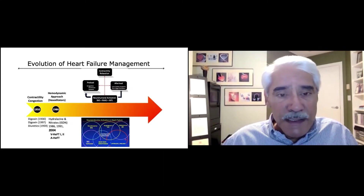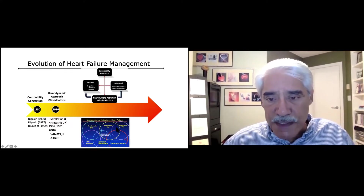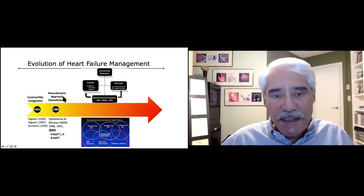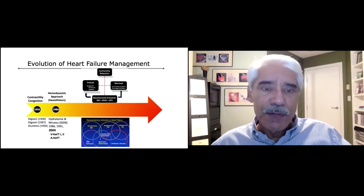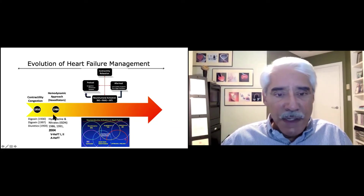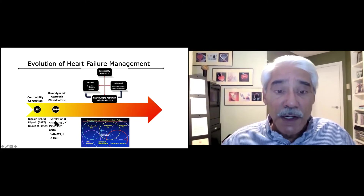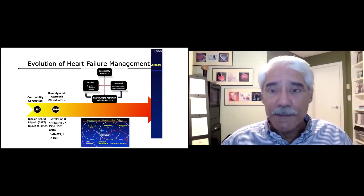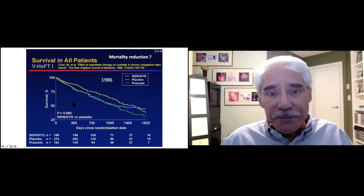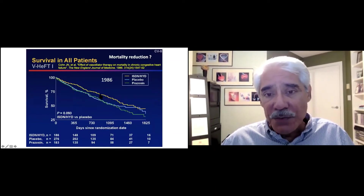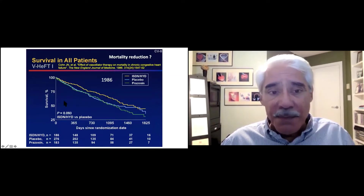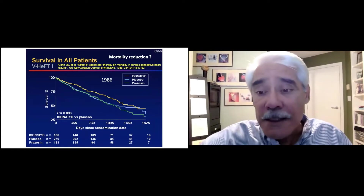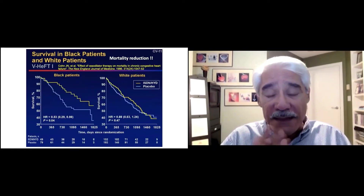Moving into the 1980s, we began to address the situation of afterload and preload — the hemodynamic problem. We said, let's approach it with a vasodilator: arteriolar dilation and venous dilation with hydralazine and nitrates. That started the era of the VHEF studies. The big trial was VHEF-1, which showed that patients who received isosorbide dinitrate and hydralazine had much better survival than patients on placebo or prazosin, demonstrating the benefit of hydralazine and nitrates.